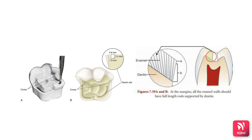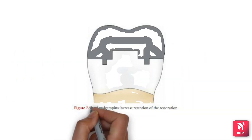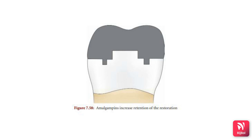The next retention form is amalgam pins. These are vertical posts of amalgam anchored in the dentine, with a retentive pin design. The channel is prepared using an inverted cone burr, with a depth of 1 to 2 mm and a width of 0.5 to 1 mm.